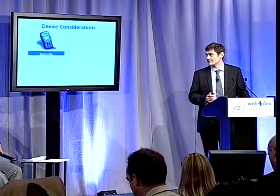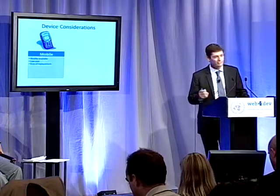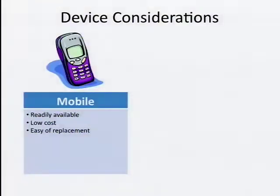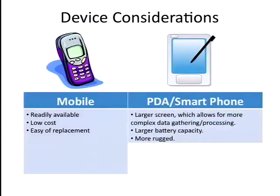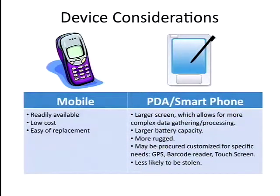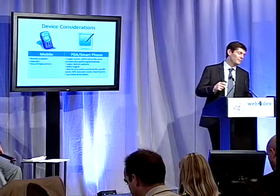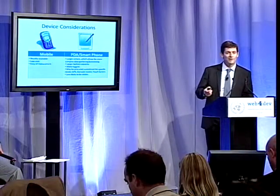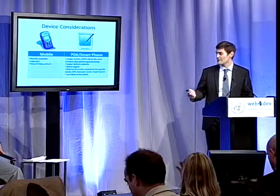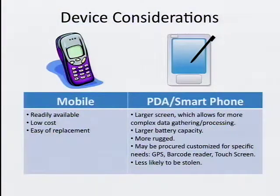Talking about devices, we have been discussing mobile phones — they are ubiquitous in Africa, very present, low cost, and end users already have them. However, if we have the choice, we should consider using a PDA or smartphone that can be procured in a way that better fits our needs: more rugged, with specialized customized functions like GPS and other facilities.